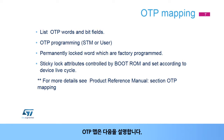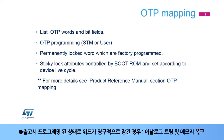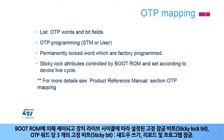The OTP map describes the full list of OTP words and bit fields, information about who is allowed to program the OTP words — STMicroelectronics or the user — whether words are permanently locked as factory programmed, for example analog trim and memory repair, and sticky lock bits controlled by boot ROM and set according to the device lifecycle. There are three sticky bits per OTP word: Shadow Write Lock, Shadow Reload Lock, and Shadow Program Lock.